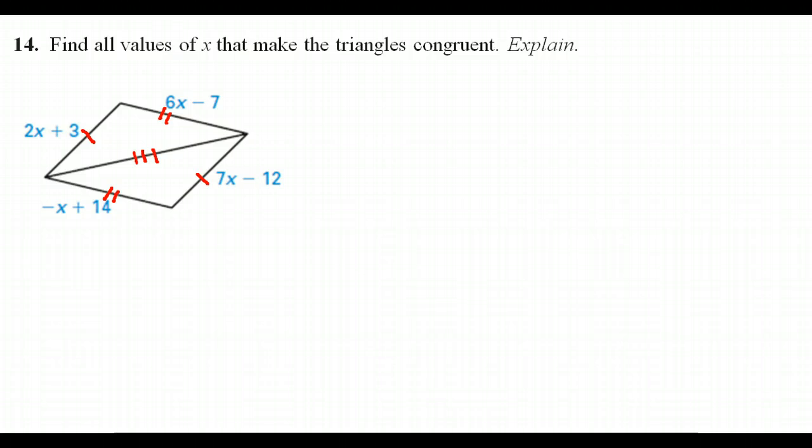So if this is the congruence, sort of matched up opposite like this, then we can make some equations to solve. For example, okay, the way I have it marked, it's possible that the 2x plus 3 should correspond to the 7x minus 12. These sides should be equal. If that's true, then I can make that equation.